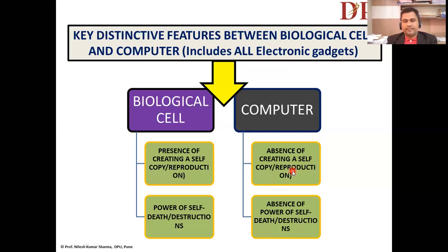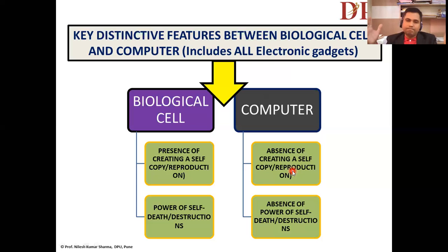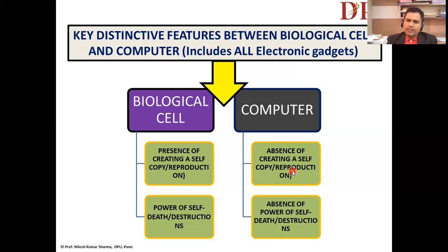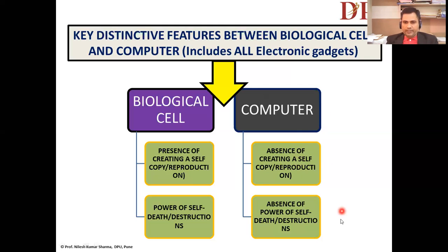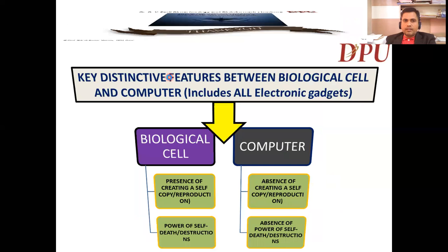At least with current AI technologies, I'm not sure whether computer systems are enabled with self-death or self-destruction. But I foresee that in the future, once AI-enabled systems are equipped with these two qualities — self-copy and self-destruction — that will be outstanding. I believe that in the future computers will be at least partially equipped with these two properties. Thank you very much; I hope this helps beginners in biological science understand these two very buzzword fields in 2020 — computer and biological science.